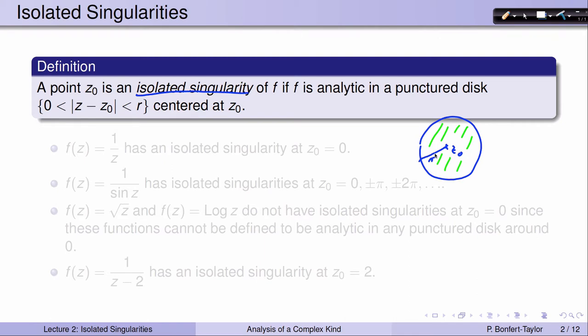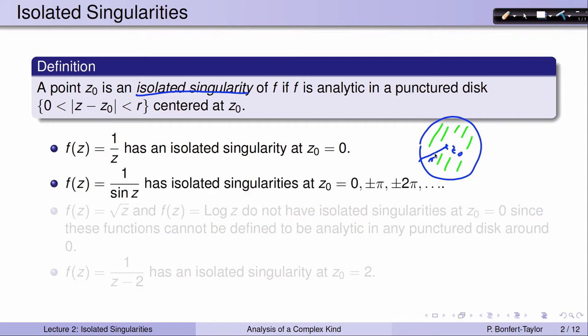Let's look at some examples. The function 1 over z is analytic everywhere except at 0, because we can't divide by 0, and therefore this function has an isolated singularity at 0. The function 1 over sin(z) has isolated singularities whenever we're dividing at 0, so whenever the sin function is 0.